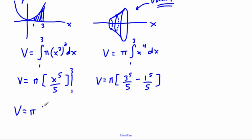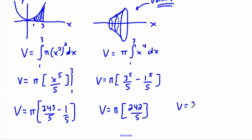Well, that was pretty easy. So therefore, my volume is going to be pi times, well, 243 minus one is 242 over five. So if I really wanted to write it out nice and pretty, I could say, therefore, it's 242 pi over five. That is the exact value.